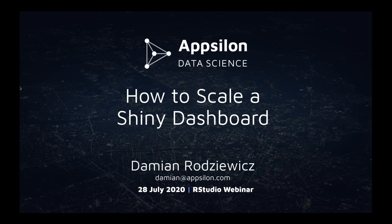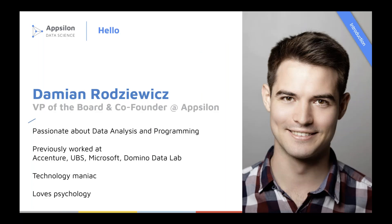We are going through a journey together when it comes to working remotely. In my part, I would like to share with you how we can scale a Shiny dashboard. My name is Damir Javish, I'm one of the founders of Apsilon. I have worked with many different languages like Scala, C Sharp, Python, C++, and JavaScript, and I always like to combine all the knowledge from different technologies and apply it to R and Shiny. Throughout my experience, I have never seen a language with a library that are so fast to build great-looking applications that are then used in production.